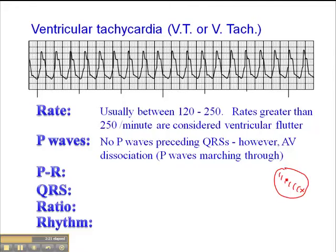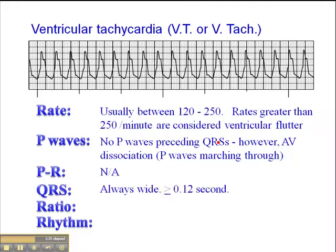So if you do see evidence of P-waves firing at a slower rate than the QRSs and not associated with QRSs, then you've got AV dissociation — and that's diagnostic of VTAC. P-waves are not applicable otherwise. QRS is always wide at 0.12 seconds or greater, typically 0.14 seconds. The P:QRS ratio is not applicable because there are no P-waves associated with the QRS.